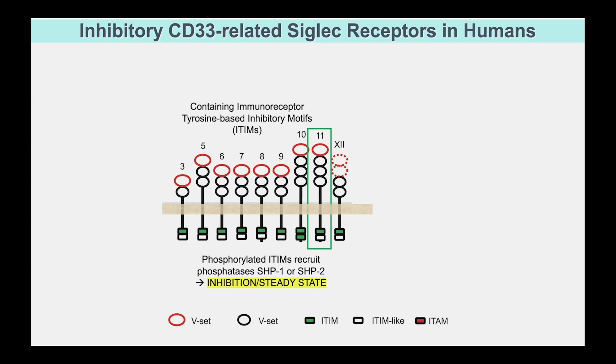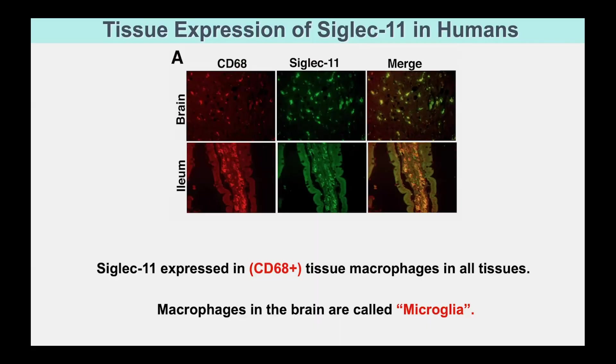Siglec-11 is numbered according to when it was found. If you look in any tissue of a mammal or primate, including humans, you find it in tissue macrophages in all tissues. But in the brain, the macrophage is called microglia. You can see here that Siglec-11 — shown in green — is present in the brain in the microglia. The ileum would be an example in a tissue like the small intestine.